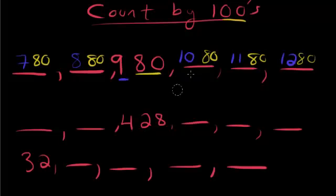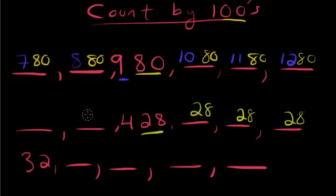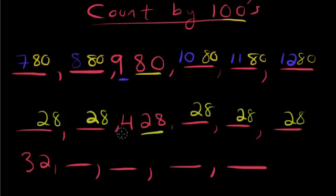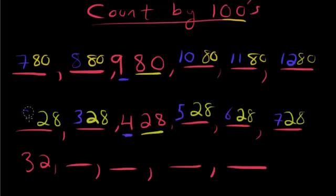For the second row, the last two numbers never change, so 28 stays throughout. On the left side, the only thing that changes is the 4: it becomes 5, then 6, then 7 going forward. Going backwards, it goes from 4 to 3, then 2.